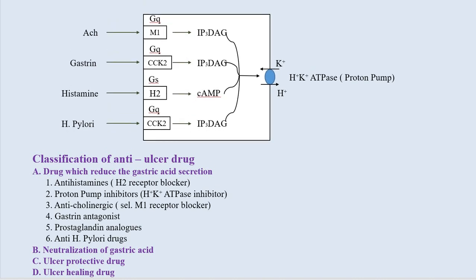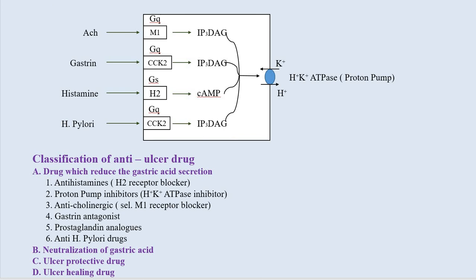There are three types of receptors present on the gastric parietal cell: the M1 receptor (muscarinic receptor), the cholecystokinin receptor, and the histamine receptor — especially H2 receptors. The cholecystokinin receptor is stimulated by two different stimulants. The main stimulators are: for the muscarinic receptor, acetylcholine; for the cholecystokinin receptor, gastrin; and for the histamine receptor, histamine. H. pylori is the second stimulator for the cholecystokinin receptor.